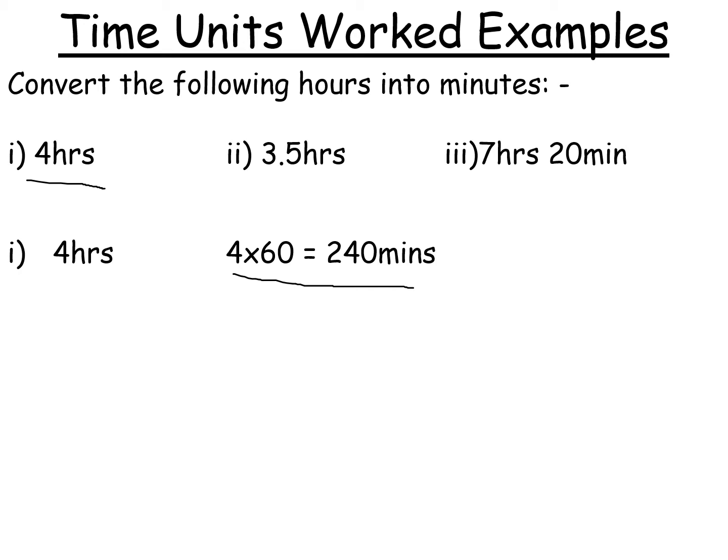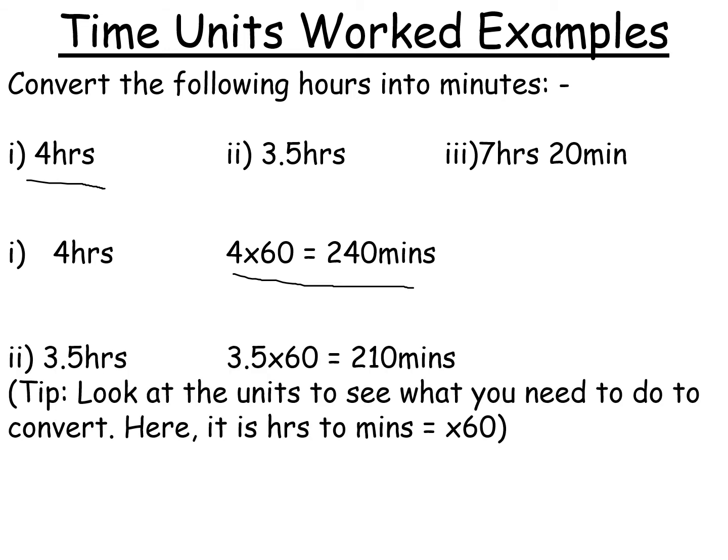Are we correct? Well, remember, I said to you, there are more minutes than there are hours. So we've got four hours and we've got 240 minutes. So that means we must be in the right direction. Second one, this one here, 3.5 times 60. You just multiply the whole thing, 3.5 by 60, and you get your answers in minutes.